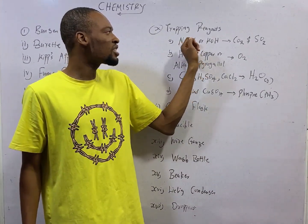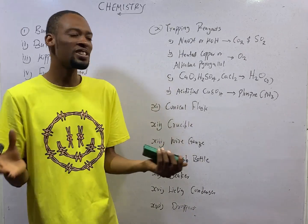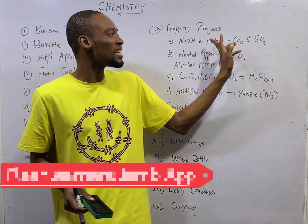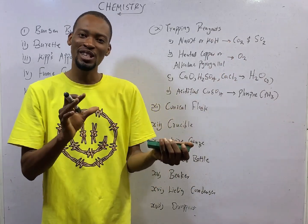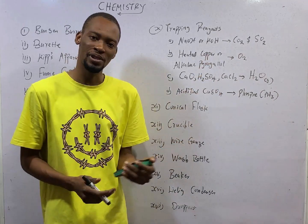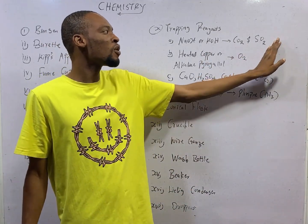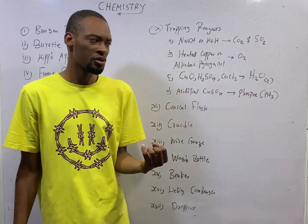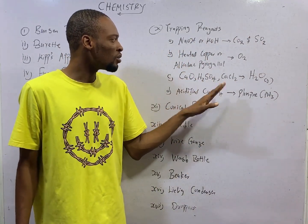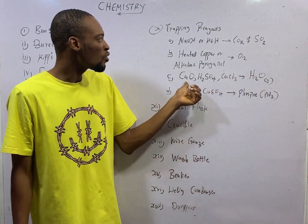Caustic soda (NaOH, sodium hydroxide) and caustic potash (potassium hydroxide, KOH) are used to trap carbon dioxide (CO₂) and sulfur dioxide (SO₂) from gaseous mixtures. Heated copper or alkaline pyrogallol is used to trap oxygen from gaseous mixtures.